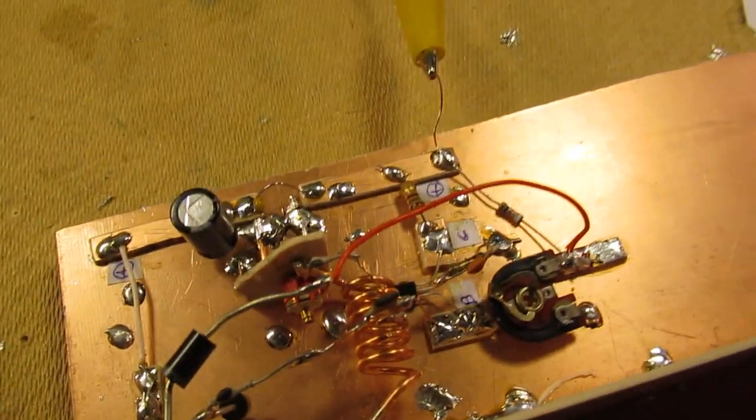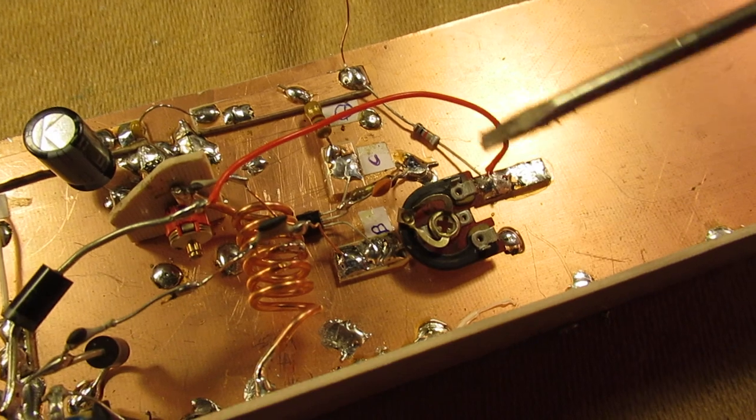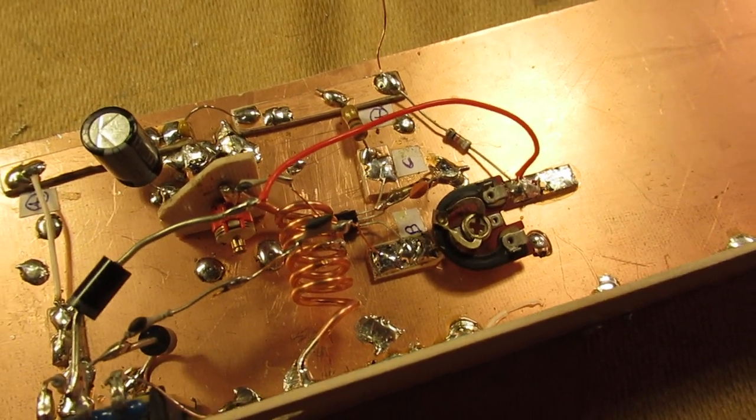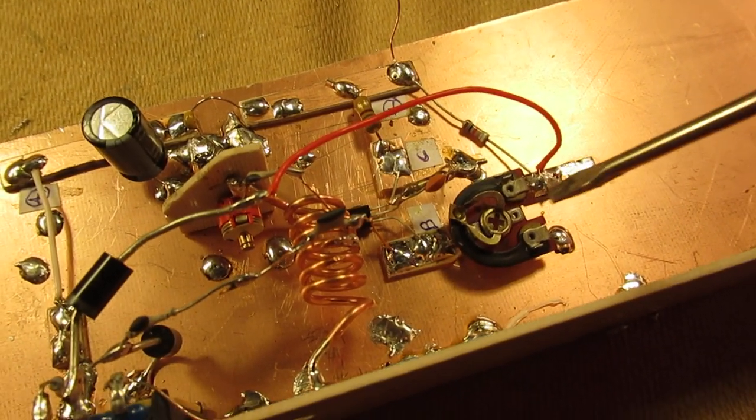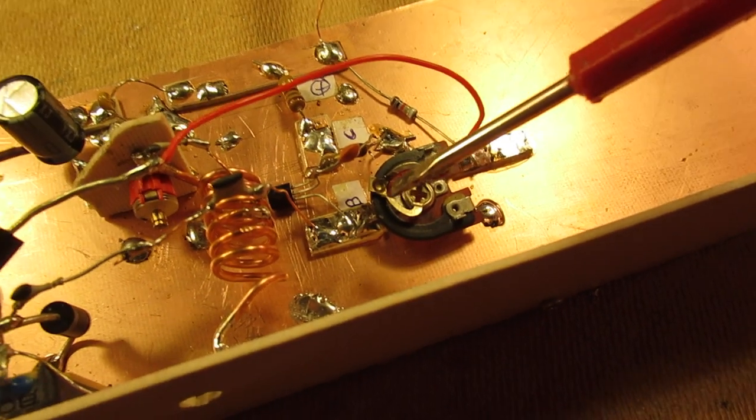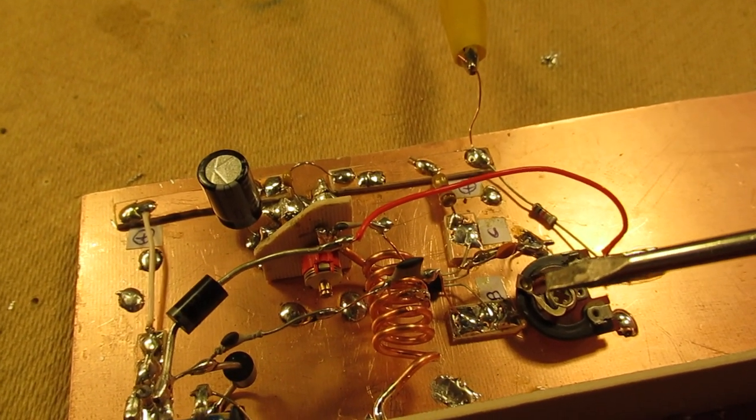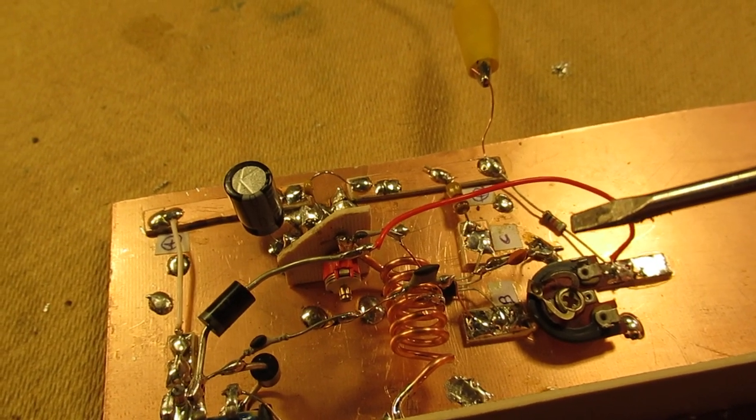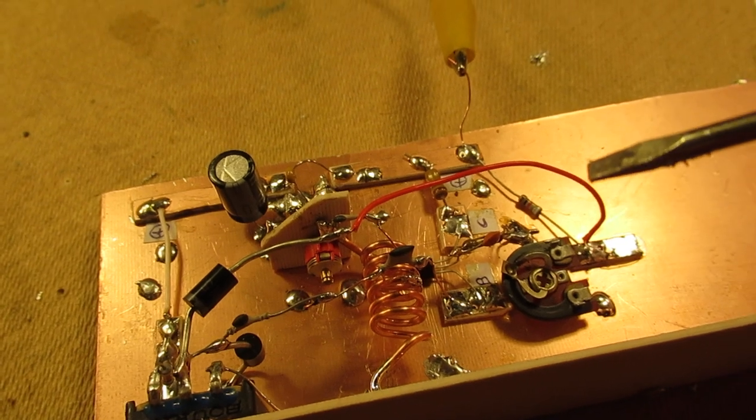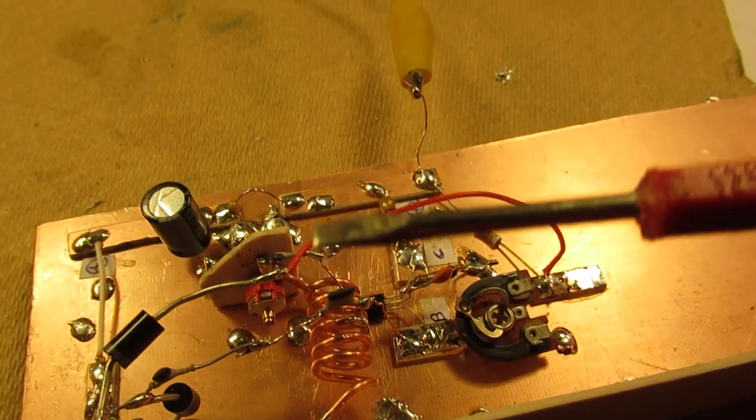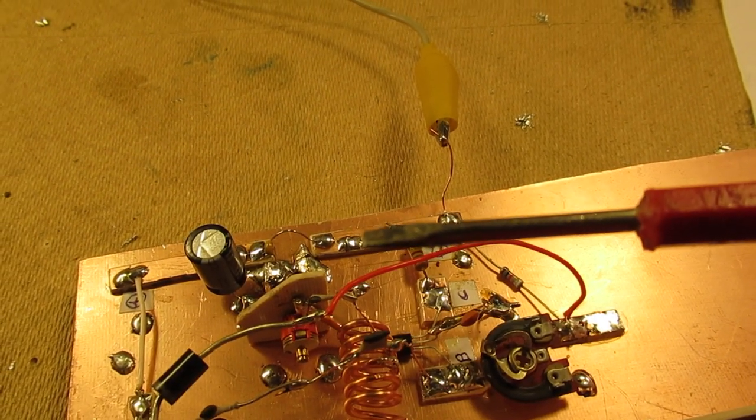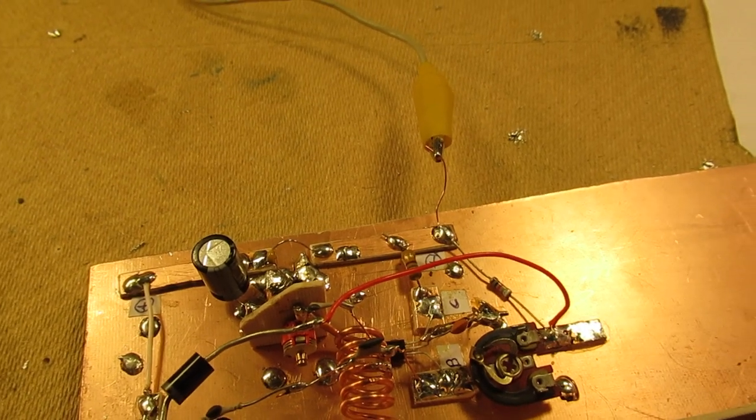And here I set the bias. The bias of that first BF199 transistor has an effect on the frequency. You can hear that here. So when I move the screwdriver into this circuit, it has an effect on the frequency. But that is not a problem. When it is aligned well, there is no noise any longer generated by this piece of metal.